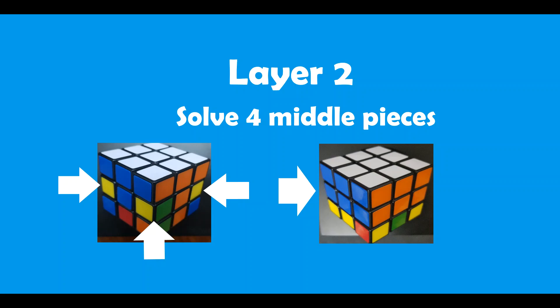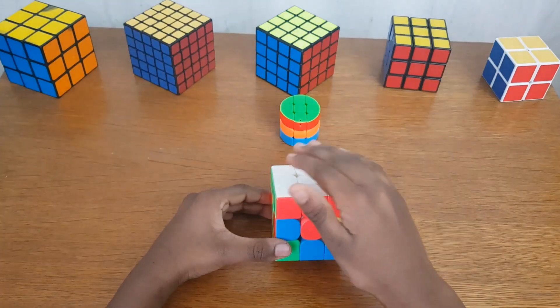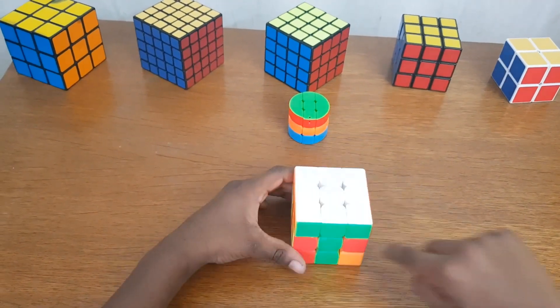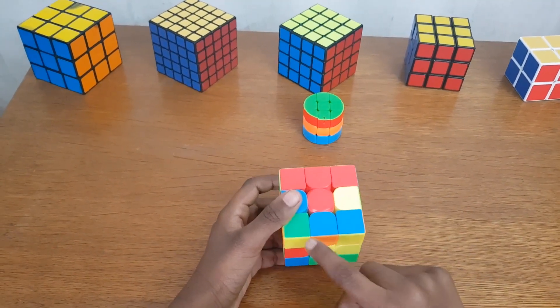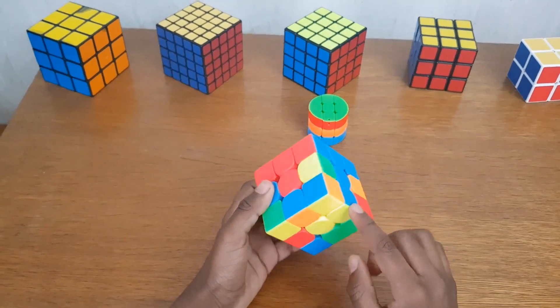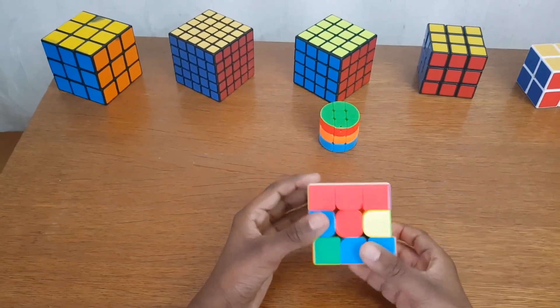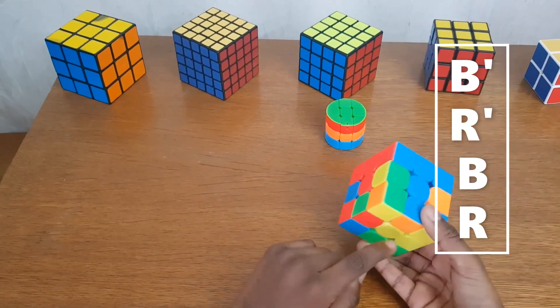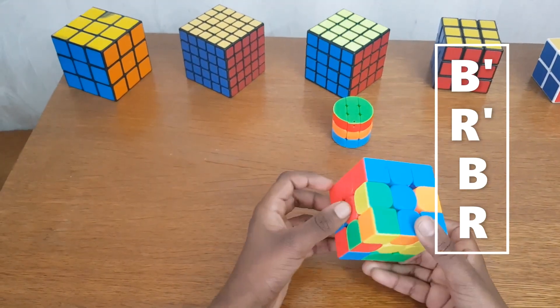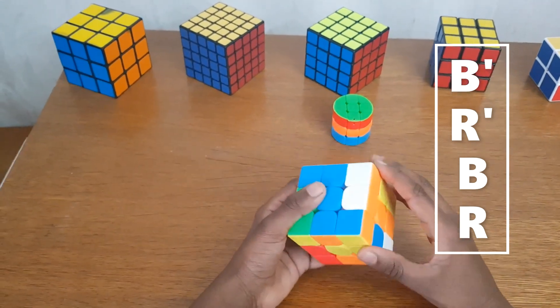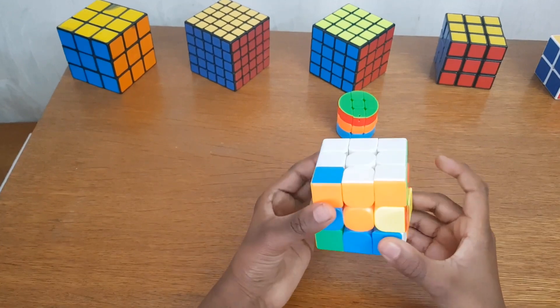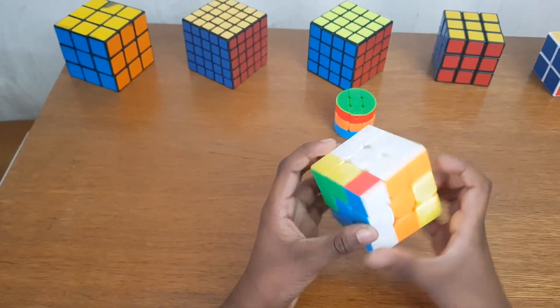Let's solve all the four middle pieces — with that, the middle layer will be solved. Take a middle piece without yellow from the bottom layer. Let's take the blue-orange piece and match it with the blue center piece. Orange is on the right, so rotate bottom counter-clockwise, right counter-clockwise, bottom clockwise, and right clockwise. The middle blue-orange piece is fixed.